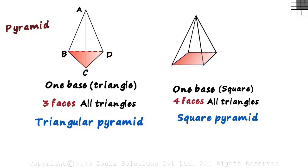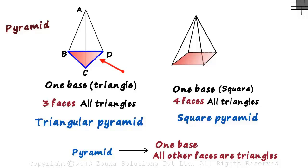So how do we define a pyramid? A pyramid is a shape which has one base and all other faces are triangles. And the type of pyramid is derived from its base. Triangular base, triangular pyramid and square base, square pyramid. And remember all other faces have to be triangles.